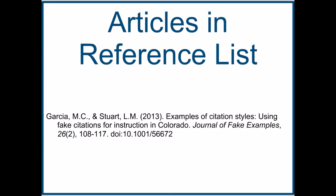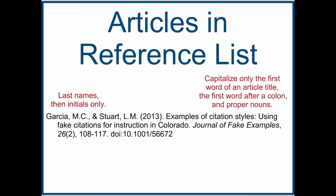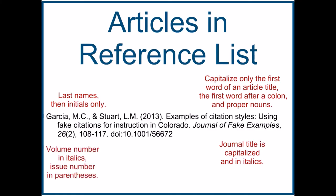Articles in your reference list should include the last name of the author and only their first initials, not their full name. As for the article title, you should capitalize only the first word of the article, as well as the first word in the subtitle, and any proper nouns. Journal title should be capitalized and in italics. The volume number is also in italics, and the issue number should be in parentheses. The article citation should end with a Digital Object Identifier, or DOI. It's worth noting that not every article has a DOI, so if it doesn't have one, you don't need to include that in your citation.